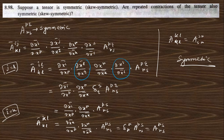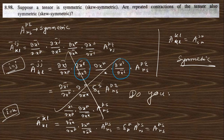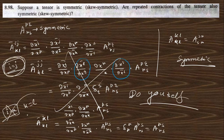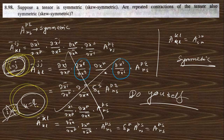Actually, I made a mistake here. We need to take i equals to j first, and then k equals to l. I request you to just do it yourself — put i equals to j and then put k equals to l, and follow this process. You can see that this will be symmetric.